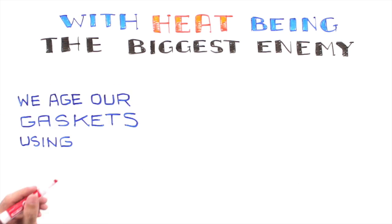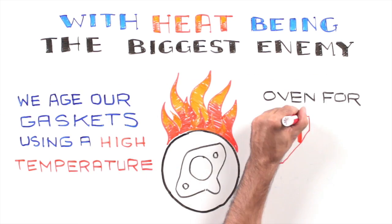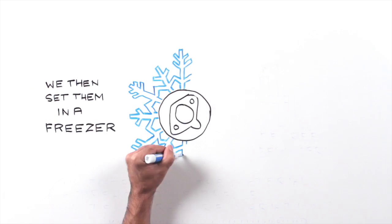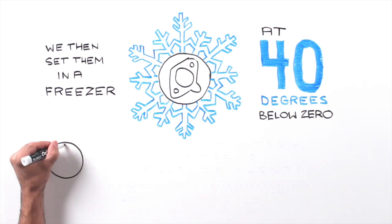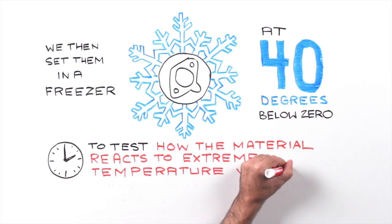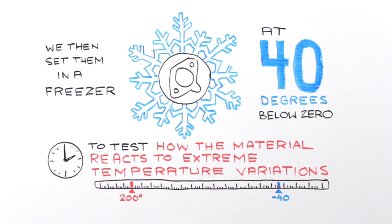With heat being the biggest enemy, we age our gaskets using a high-temperature oven for 72 hours, and we then set them in a freezer at 40 degrees below zero for the same amount of time to test how the material reacts to extreme temperature variations in order to avoid any premature leaks.